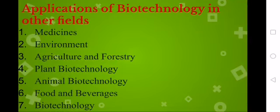Applications of biotechnology in other fields. First we have medicine: biotechnology is being used to treat diseases through therapeutics and biopharmaceutical products. Second is environment: any biotechnology process that may promote a good environment, for example organisms developed during the Gulf oil spill to eat oil, or organisms used in gold mining to remove contaminants.